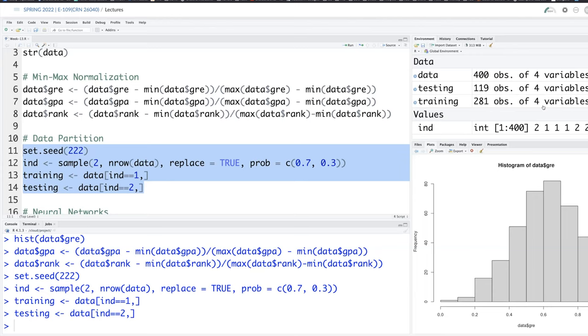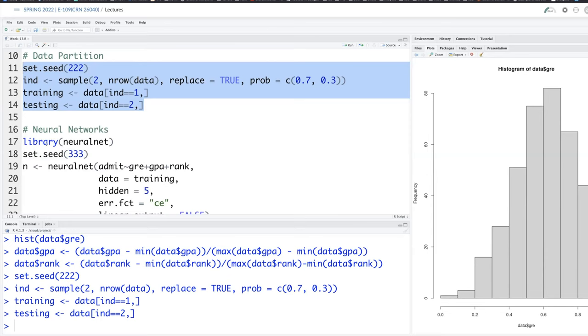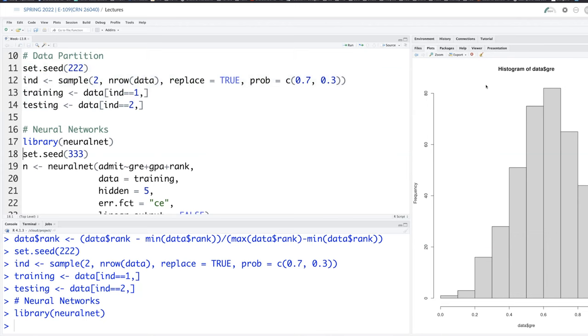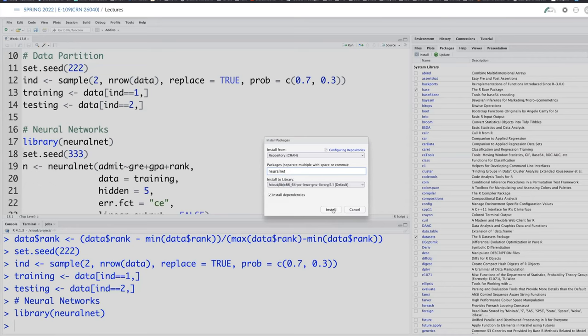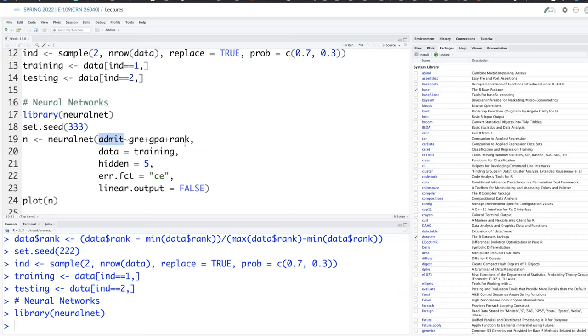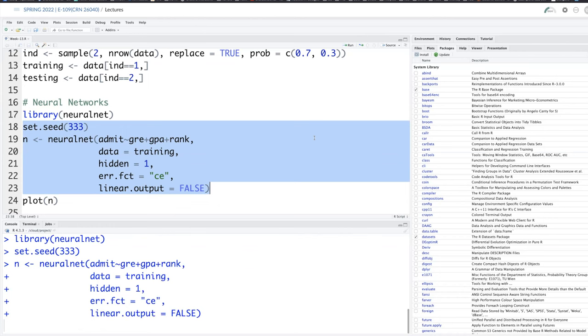So the package that we use for neural network is neural net. So I already installed it. But if you need to install, you can go to packages and then hit install and type neural net. And then it can install. Admit as a function of GRE plus GPA plus rank. And the data we are using for training this network is training data. And let me start with just one hidden layer with one neuron. And then error dot FCT CE for cross entropy. Let's run this. It will not take much time because data is small and we are using only one hidden layer with one neuron. So really very tiny.